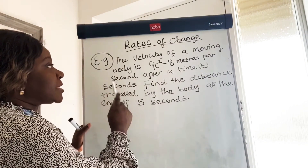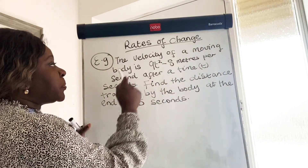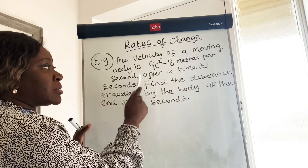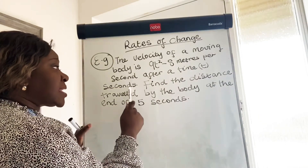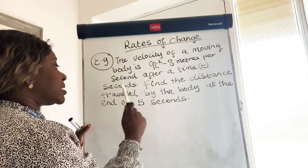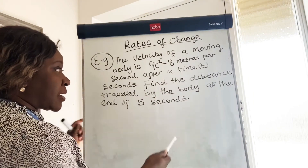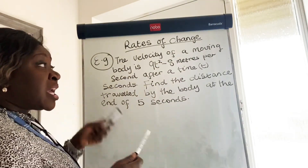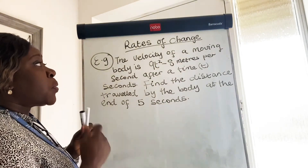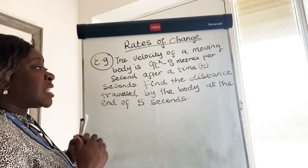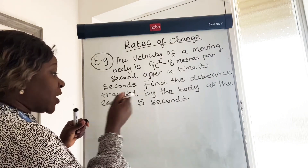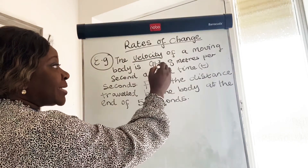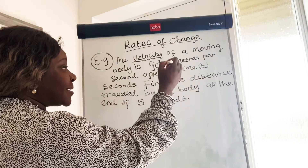Now let's look at this example. It says the velocity of a moving body is 9t squared minus 8 meters per second after a time t seconds. Find the distance traveled by the body at the end of five seconds. Don't worry about all that — it may look overwhelming at first, but what you want to do is underline the keywords. It's giving you the velocity of a moving body to be 9t squared minus 8.